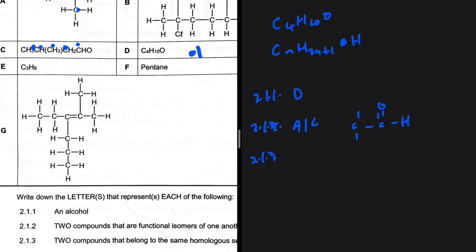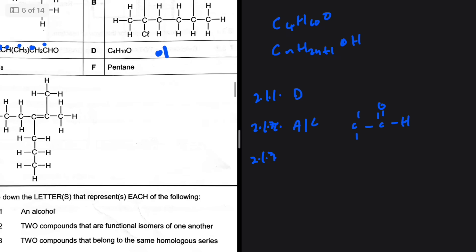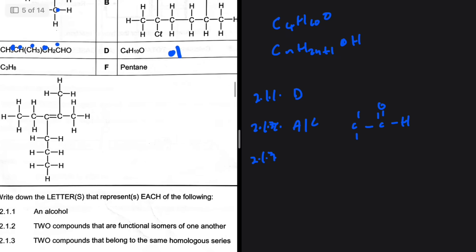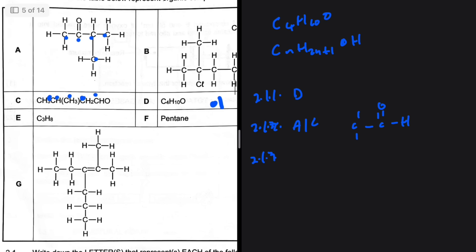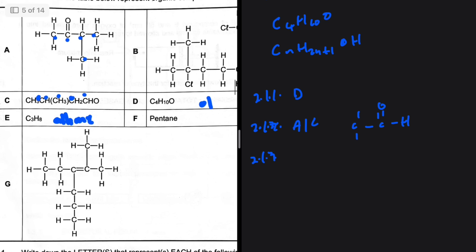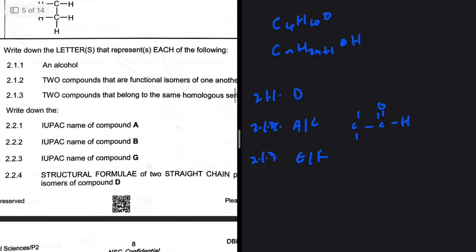Question 2.1.3: two compounds that belong to the same homologous series. E is an alkane, and F is pentane — also an alkane. So E and F both belong to the same homologous series.